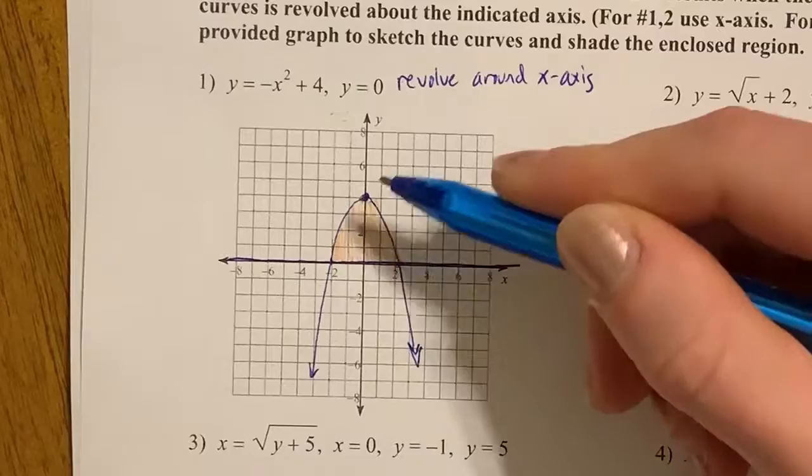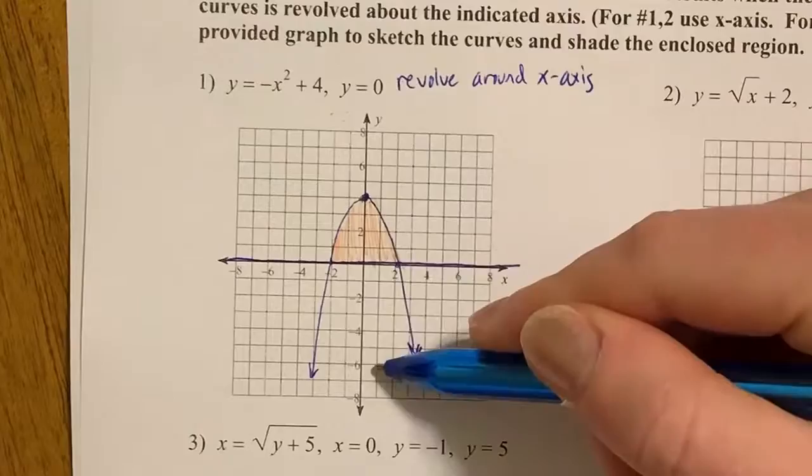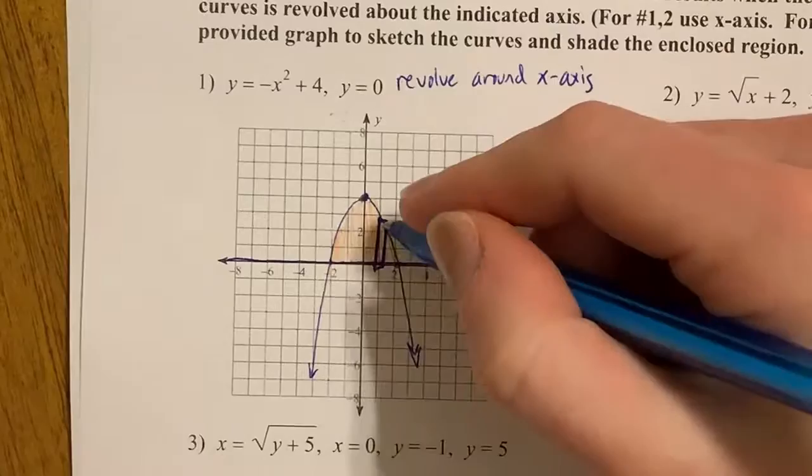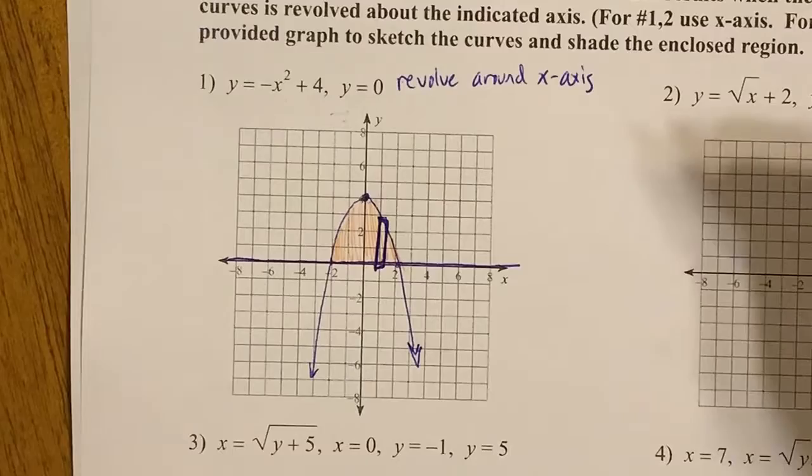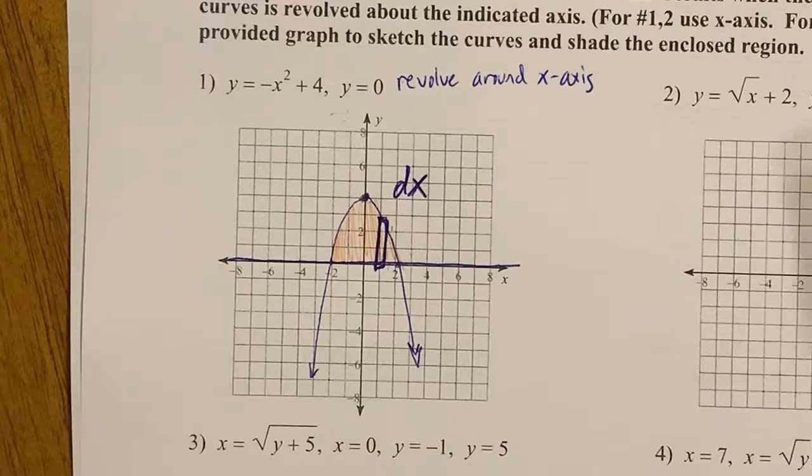So if I'm going to slice this into circles, which you want to do for revolving, then to make it into circles I need to slice it this way. So I'm drawing a bar to show the slice, or you can remember if it's around the x-axis, your bar needs to go down to the x-axis. Because my bar is up and down, I know that this is going to be a dx problem. Up and down means dx.